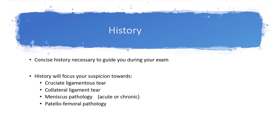History is not the focus of this talk, but with a concise history you can direct your suspicion to a certain structure. If a cruciate ligament is torn, it's normally an athlete who describes an acute traumatic event during sport — they may have heard a snap or crack, the knee swelled up immediately, and they were unable to continue playing. With a collateral ligament tear, the patient may describe someone tackling the knee from the medial or lateral side, forcing the knee open.